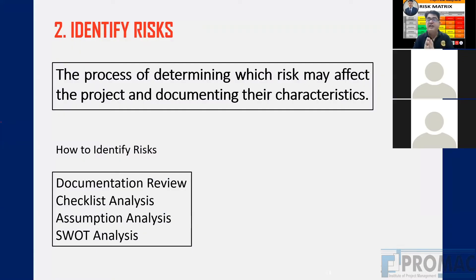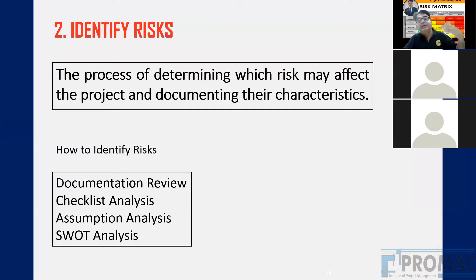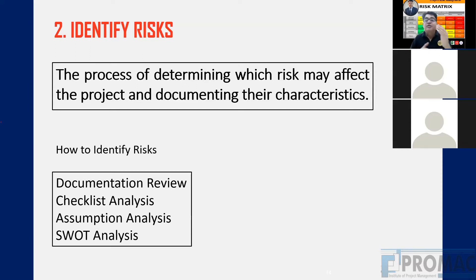The second process is Identify Risk. How will we identify risk? Suppose we are doing a similar project that we have done before. In the lessons learned, we can see what risks occurred in previous projects — projects got delayed because of these reasons, quality was hampered because of these reasons, scope changes occurred because of these reasons.